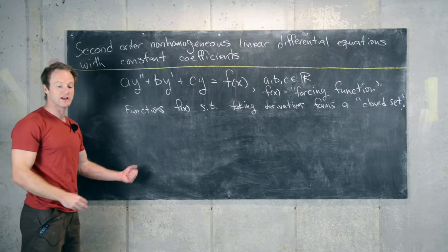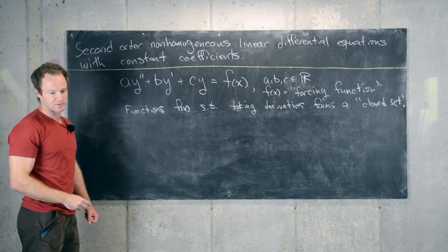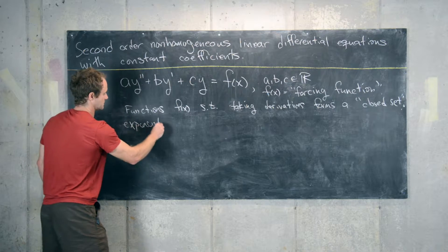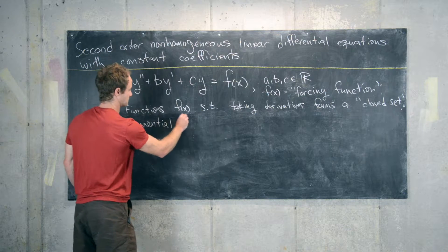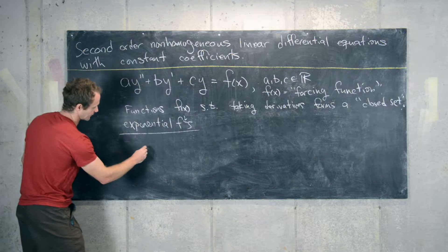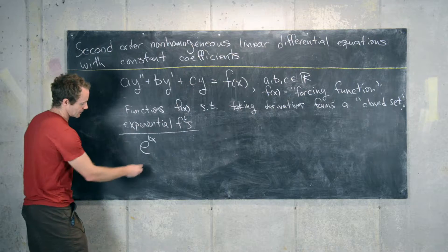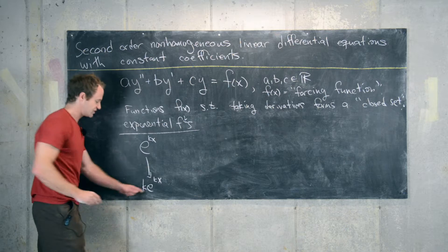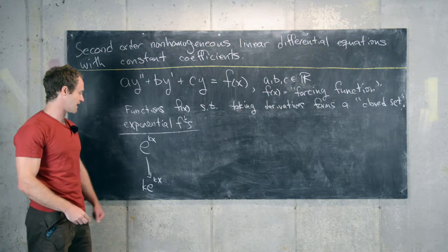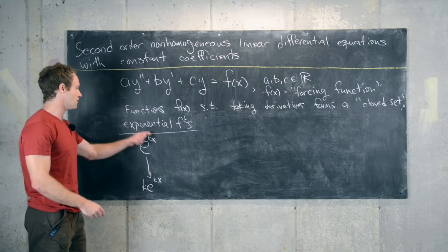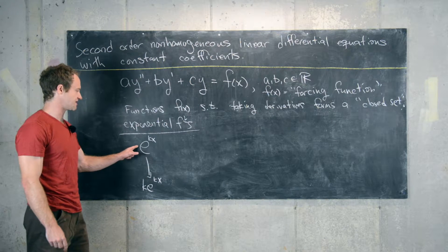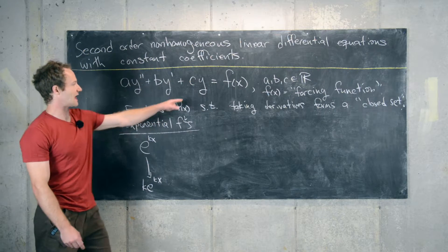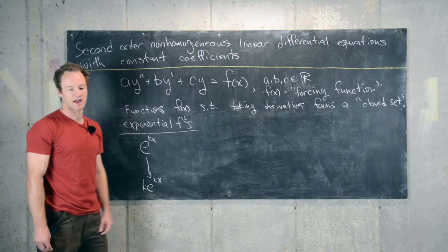This will be like three main families. First, exponential functions: for example, e to the kx. If we take the derivative of that, we get k times e to the kx, which is essentially the same as e to the kx — we've just multiplied by the number k. So here we have a closed set; all derivatives are just the original exponential function. Exponential functions would be an allowable type of function to look at initially.